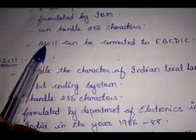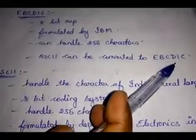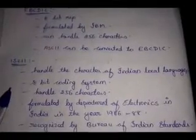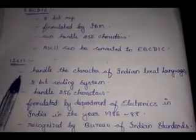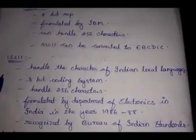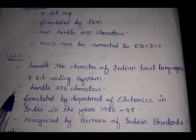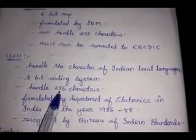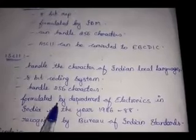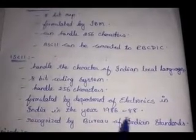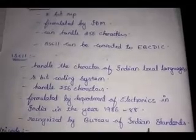Characters in ASCII code can be converted into EBCDIC, and characters in EBCDIC can also be converted into ASCII code. The next coding system is ISCII, which stands for Indian Standard Code for Information Interchange. It can handle the characters of Indian local languages. It is an 8-bit coding system and can handle 256 characters. It was formulated by the Department of Electronics in India in the years 1986 to 1988, and is recognized by the Bureau of Indian Standards.